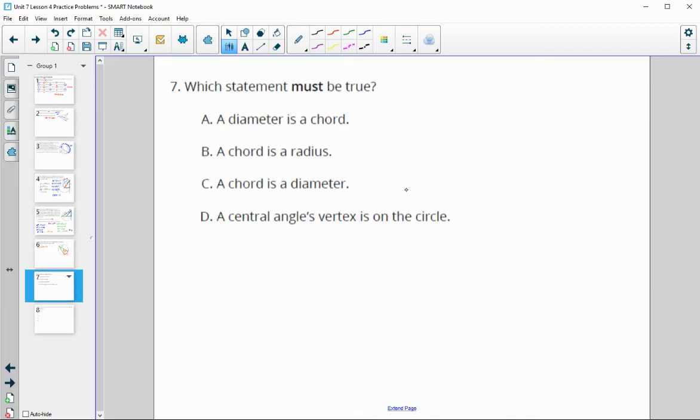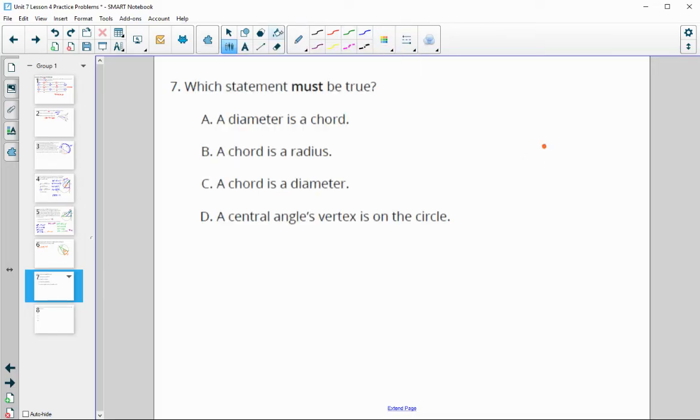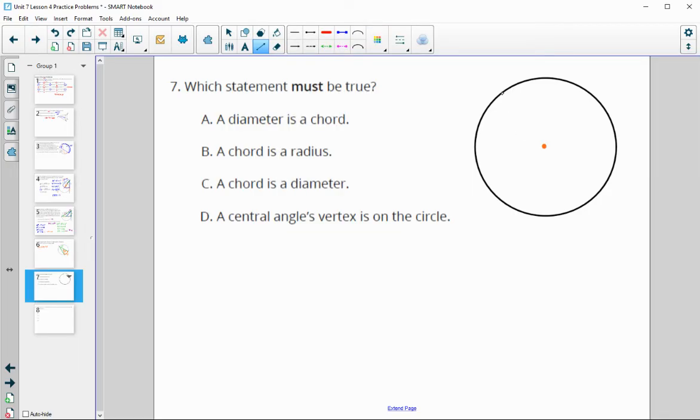Which statement must be true? So let me draw a circle here to help us. So a diameter is a chord. By definition, that is absolutely true, because a diameter has to go from side to side. So it goes from one side to the next, and it has to go through the center. So a diameter is a chord that goes through the center. So this one is true.